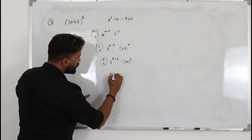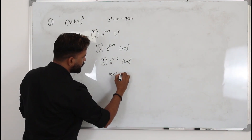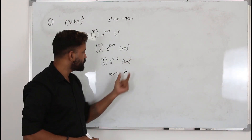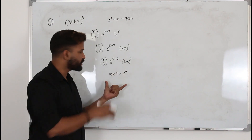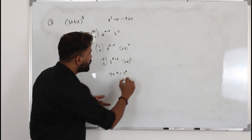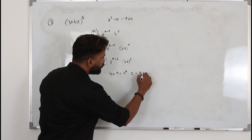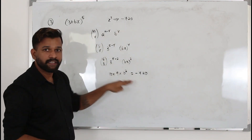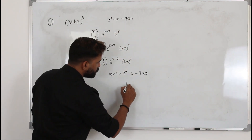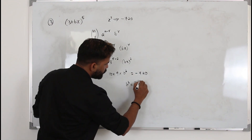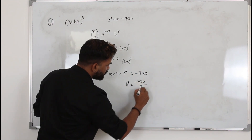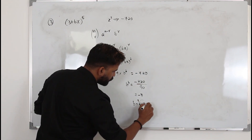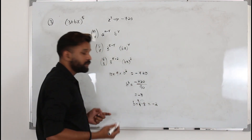5C3 is 10, 3² is 9, and the term becomes 10 × 9 × b³x³ = 90b³x³. Since the coefficient of x³ is given as −720, we don't include x³: 90b³ = −720. Solving: b³ = −720 ÷ 90 = −8, so B = ∛(−8) = −2. That's the answer.